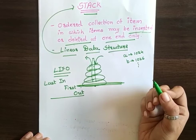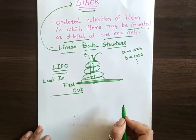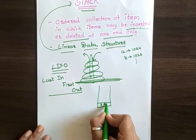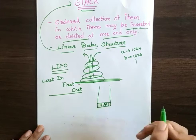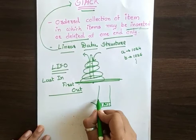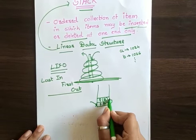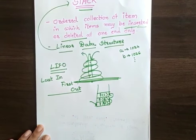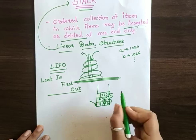We can take another example — a technical example like recursion, or we can say multiple functions. Suppose my main function calls function A, then function A calls function B. So function A will be pushed to my stack, then function B, then suppose function B calls function C. When function C is completed, it will return a value to function B.